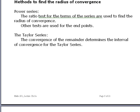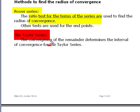So how do we determine convergence? Well, for the power series itself, we use the ratio test to determine the radius of convergence. Then we can use other tests for the end points. For the Taylor series, we use what's called the remainder, and we'll discuss that in the lectures on the Taylor series.